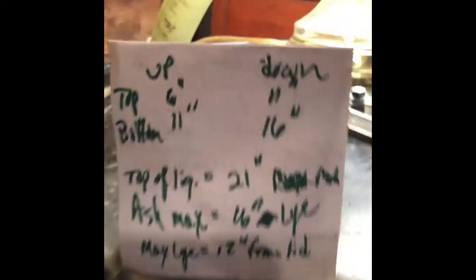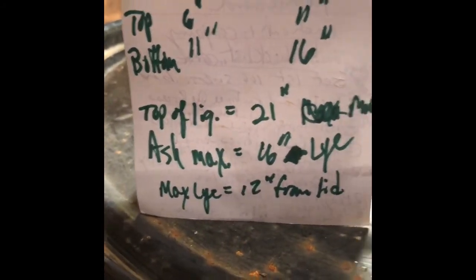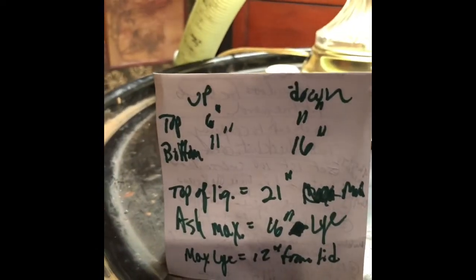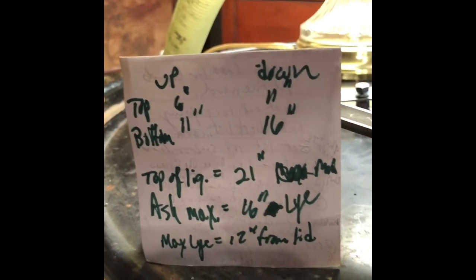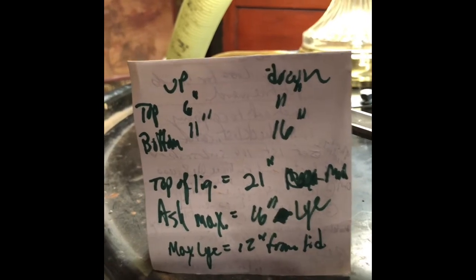These are the heights when the basket is pulled up like it is now - from the top of the basket to the lid, and the bottom of the basket to the lid.